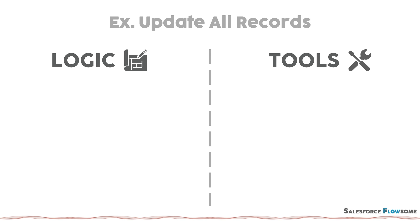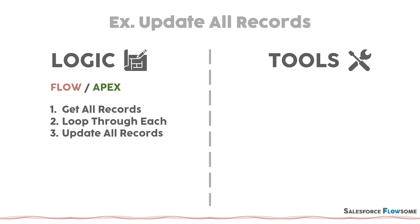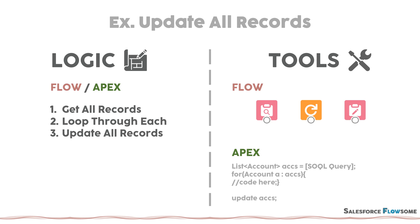Let's take a real-world example: to update old account records. For the logic part, first we need to get all the accounts, loop through them to edit the fields, then update them all at once. It's the same steps for both Flow and Apex, and only the tools are different. For Flow, we have these pre-built elements, and even though we have to hard-code everything in Apex, they essentially represent the same actions.